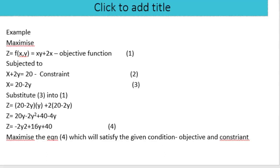For example: maximize z, a function of x and y, given as z = xy + 2x. This is the objective function, and it is subject to the constraint x + 2y = 20.